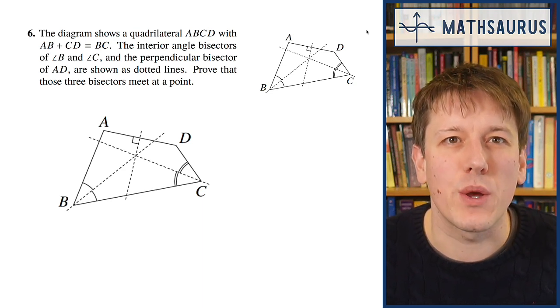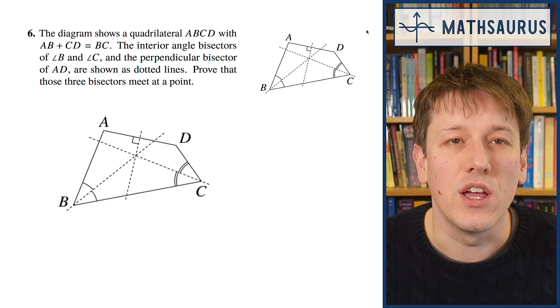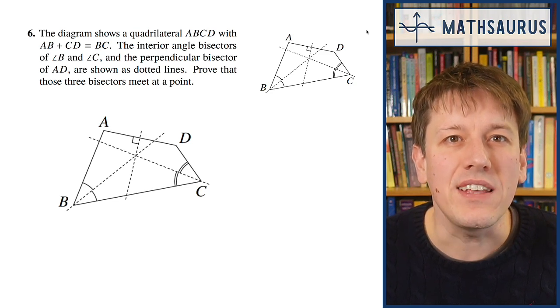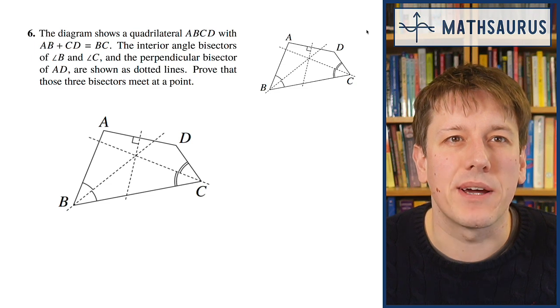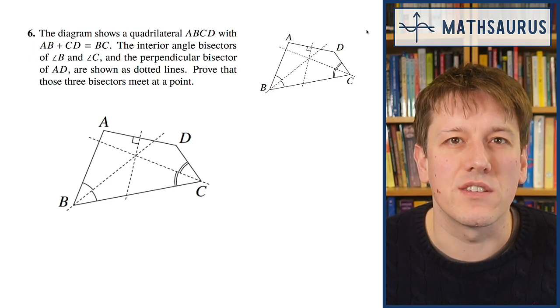We've got a diagram showing a quadrilateral ABCD where AB plus CD equals BC. The interior angle bisectors of angle B and C and the perpendicular bisector of AD are shown as dotted lines.